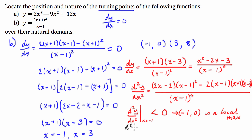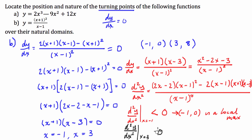Evaluating the second derivative at x equals 3: we get 4 times 4, which is 16 in the numerator, minus 0, over a positive number. So the second derivative is greater than 0. Therefore (3, 8) is a local minimum.